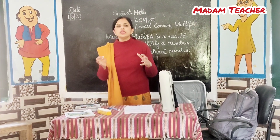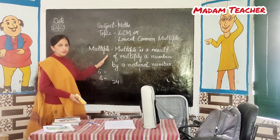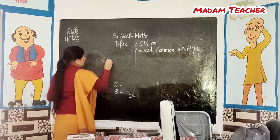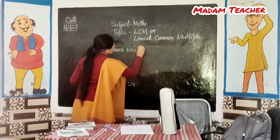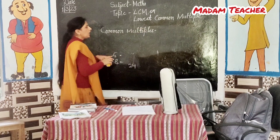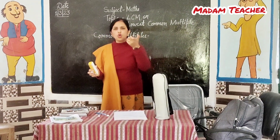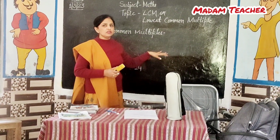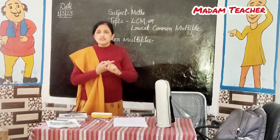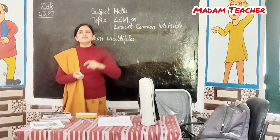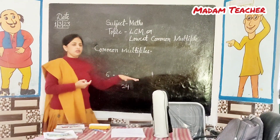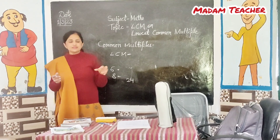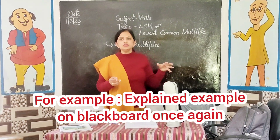Got it? So what is LCM — what is Lowest Common Multiple? What are common multiples? The multiples which are common in 2 or more numbers. For example, the common multiples of 6 and 8 were 24 and 48. LCM — Lowest Common Multiple — is the very smallest common multiple which is lowest among 2 or 3 numbers. Clear?